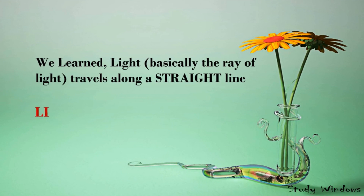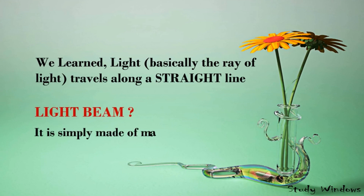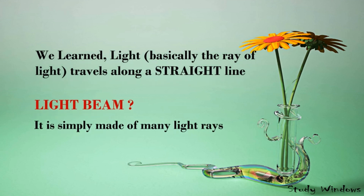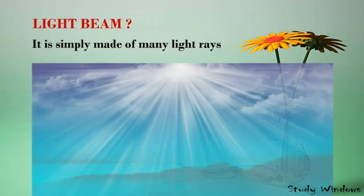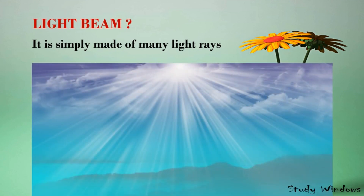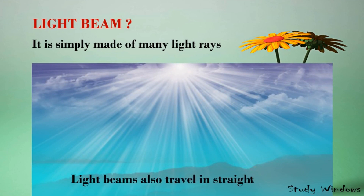We have learned that a ray of light travels along a straight line. Do you know what a light beam is? A light beam is simply made of many light rays together. Just like light rays, light beams also travel in straight lines.